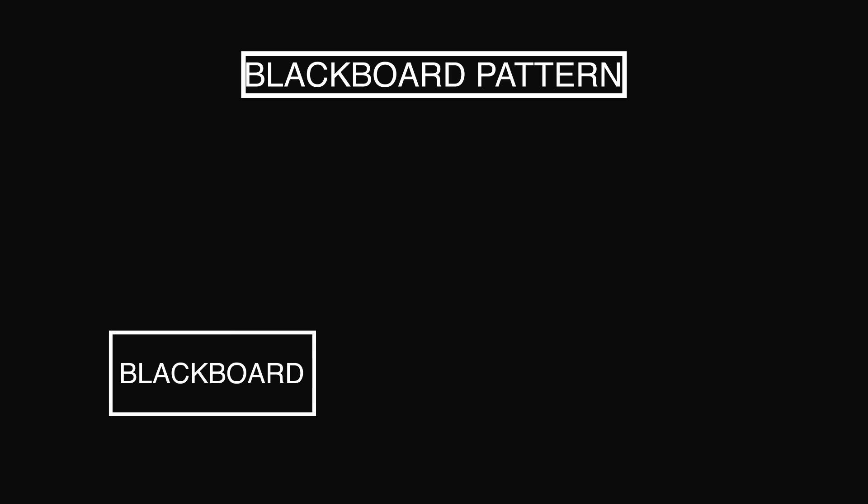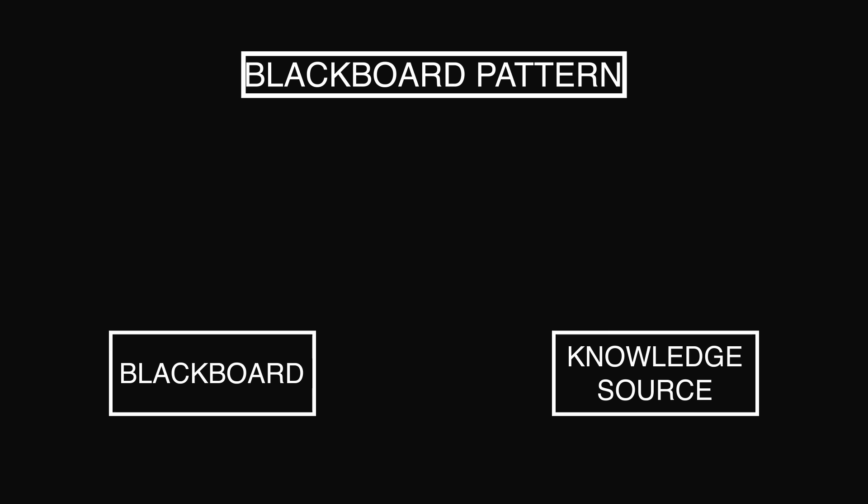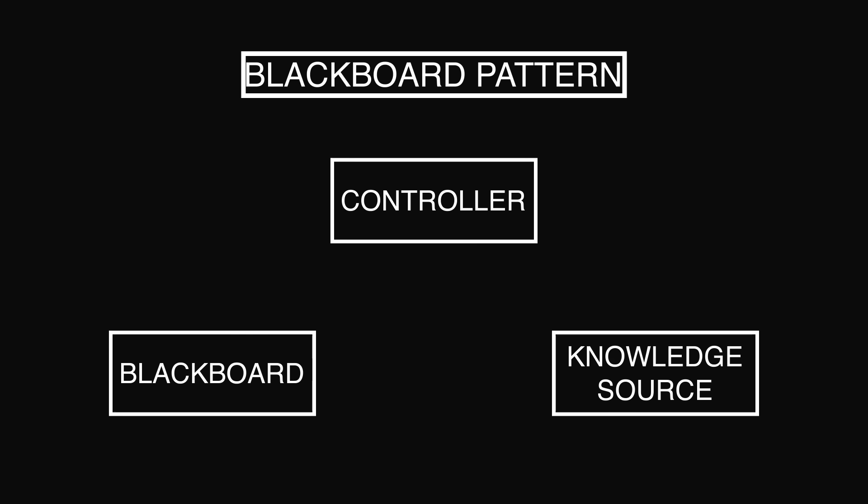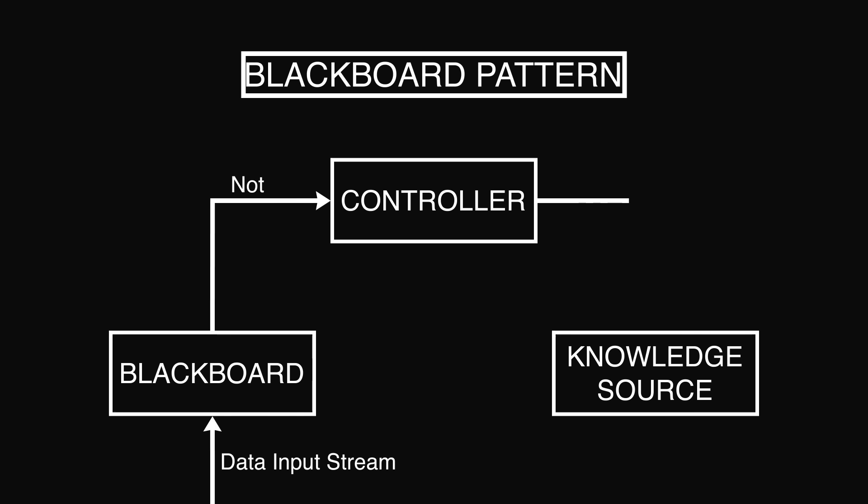Pattern 9: Blackboard Pattern. This pattern is useful for problems for which no deterministic solution strategies are known. The blackboard pattern consists of three main components: Blackboard, which is a structured global memory containing objects from the solution space; Knowledge source, which consists of specialized modules with their own representation; and Control component, which selects, configures, and executes modules. All the components have access to the blackboard. Components may produce new data objects that are added to the blackboard, and they look for particular kinds of data by pattern matching with the existing knowledge source. The advantage of this pattern is that extending the structure of the data space is easy. However, modifying the structure of the data space is hard as all applications are affected. This pattern is often used in speech recognition, protein structure identification, and sonar signals interpretation.